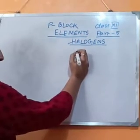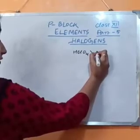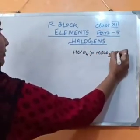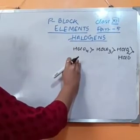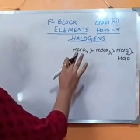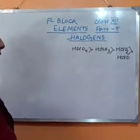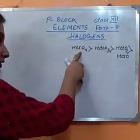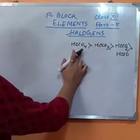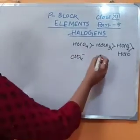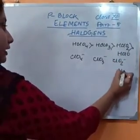Now, the oxoacids of chlorine with different oxidation numbers: the acid order is HClO₄ > HClO₃ > HClO₂ > HClO. According to Lowry-Bronsted theory, more the stability of the conjugate base of the acid, more will be the acidic character of the acid. The conjugate base of HClO₄ is ClO₄⁻, for HClO₃ it is ClO₃⁻, for HClO₂ it is ClO₂⁻, and for HClO it is ClO⁻.